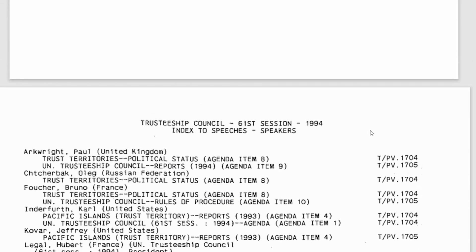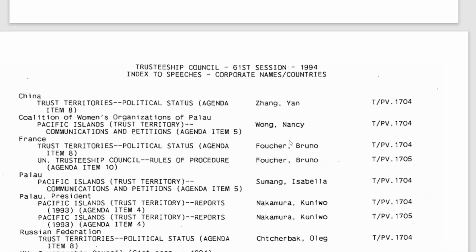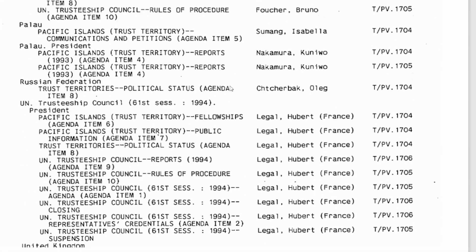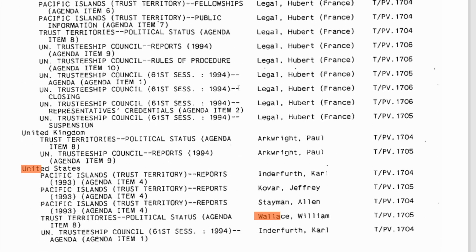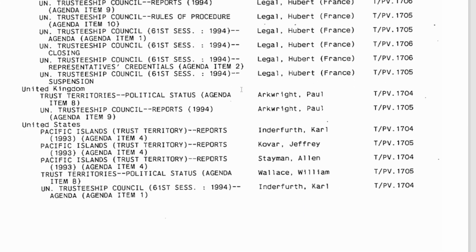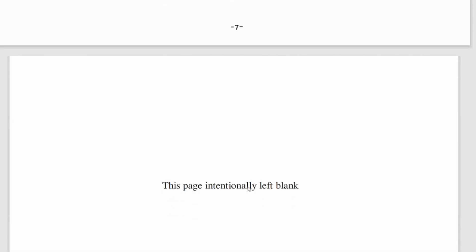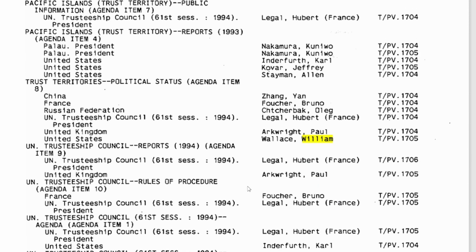If you scroll up a little further, you should also see the index to speeches organized by corporate names or countries. So we can find William Wallace under the United States, which will have the other speakers who represented this member state. And if we look further down, you'll find that organized by subjects, Mr. Wallace spoke under the trust territories political status agenda item. These two sections can be helpful if your research entails looking for speakers under a subject or country.